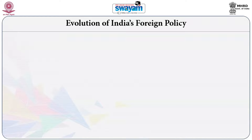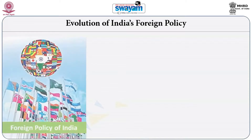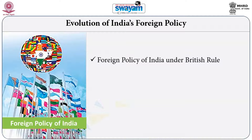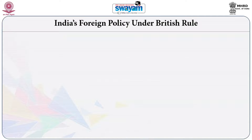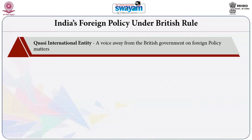The first phase started with the British period — broadly the foreign policy of India under British rule. The next three phases broadly came up in the post-independent period. India was not an independent nation state; it was a quasi-legal entity in international relations. To a large extent, India's foreign policy perspectives were reflected by India's national movement and its leadership during this period.